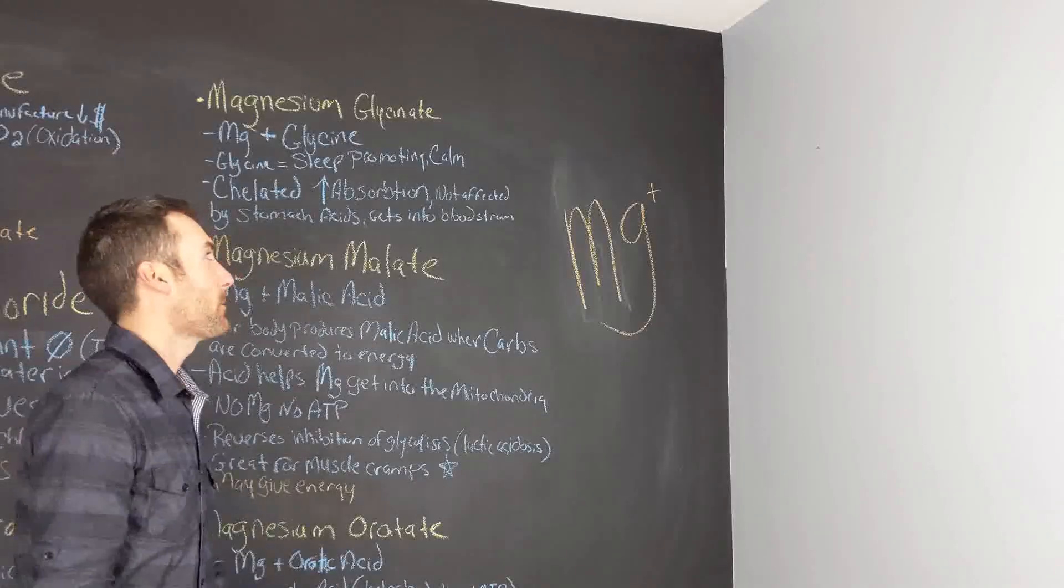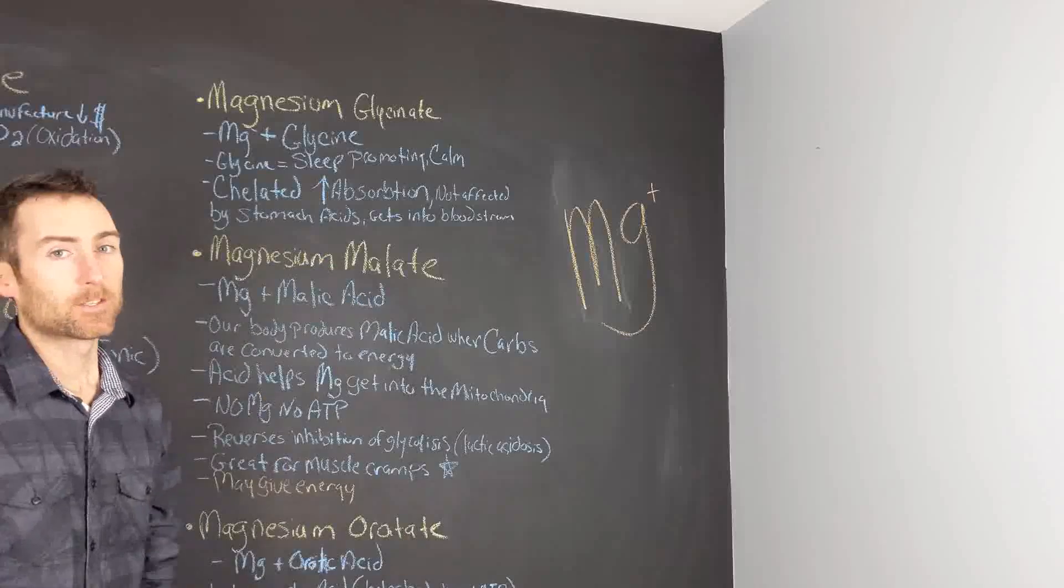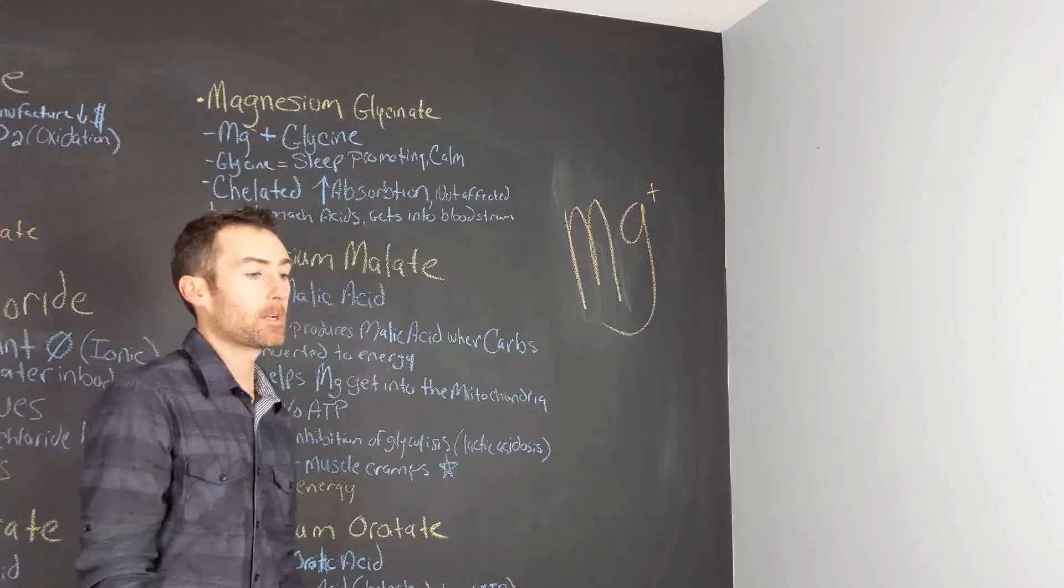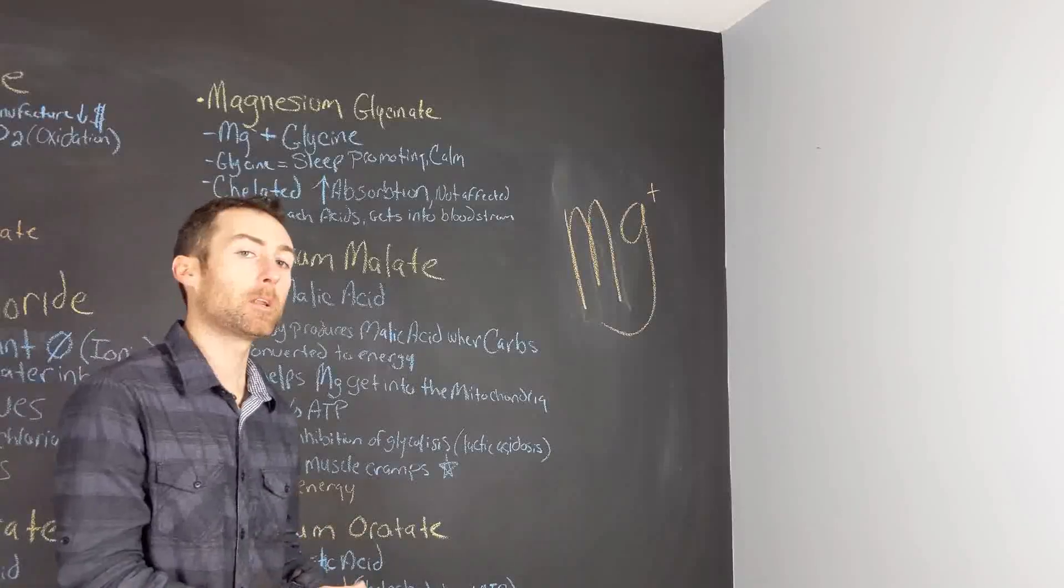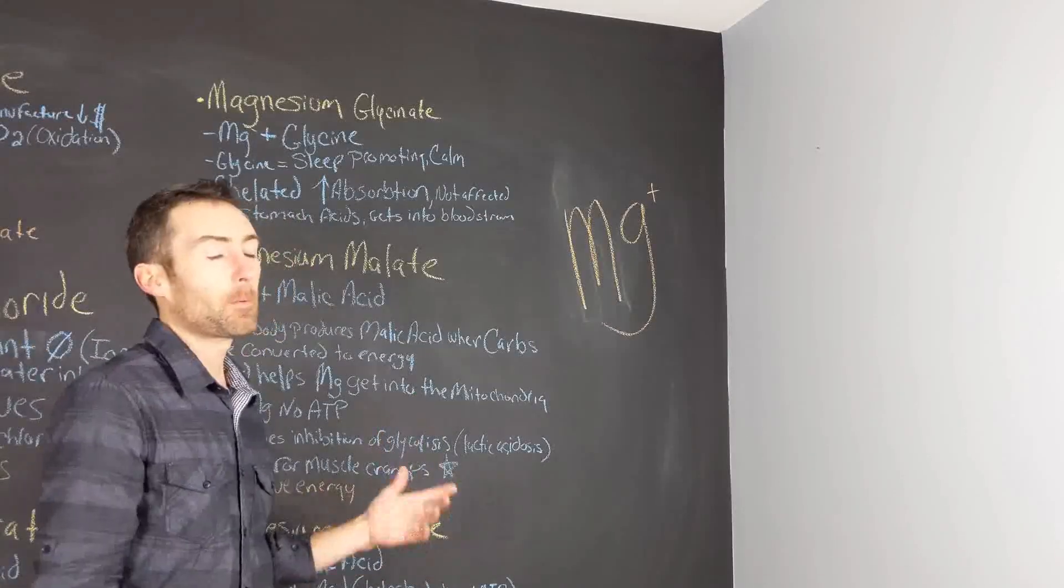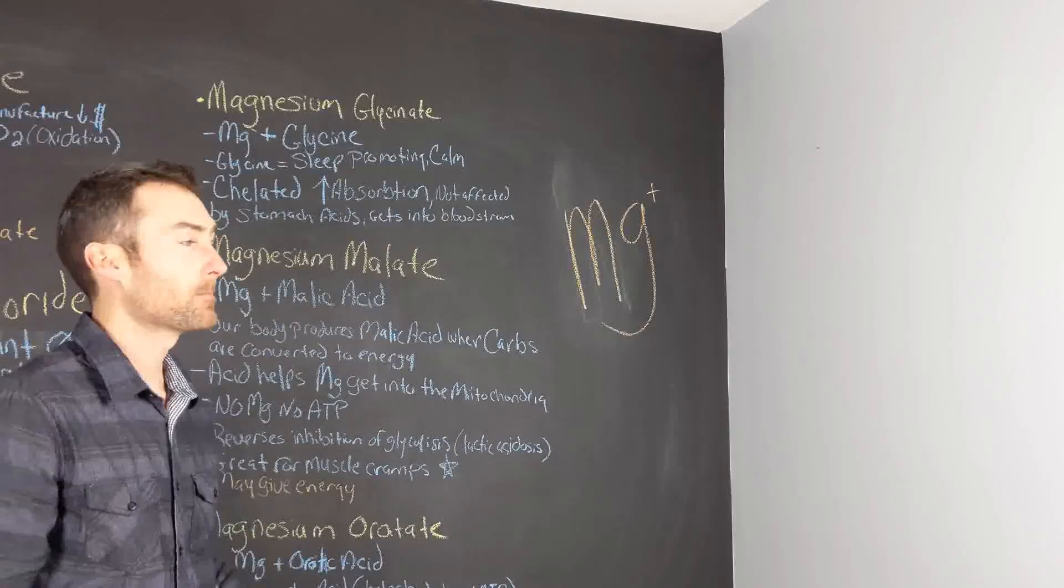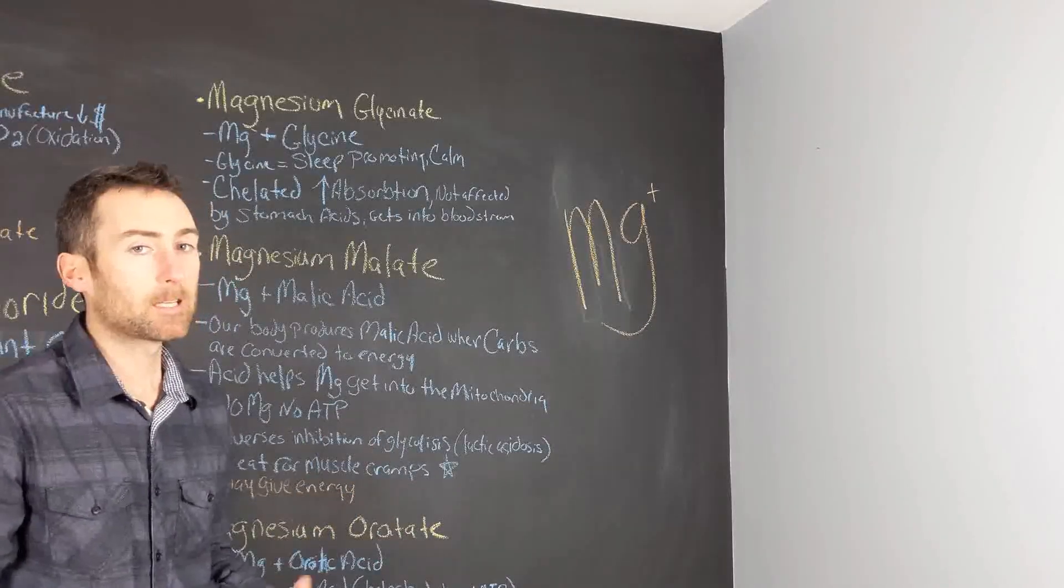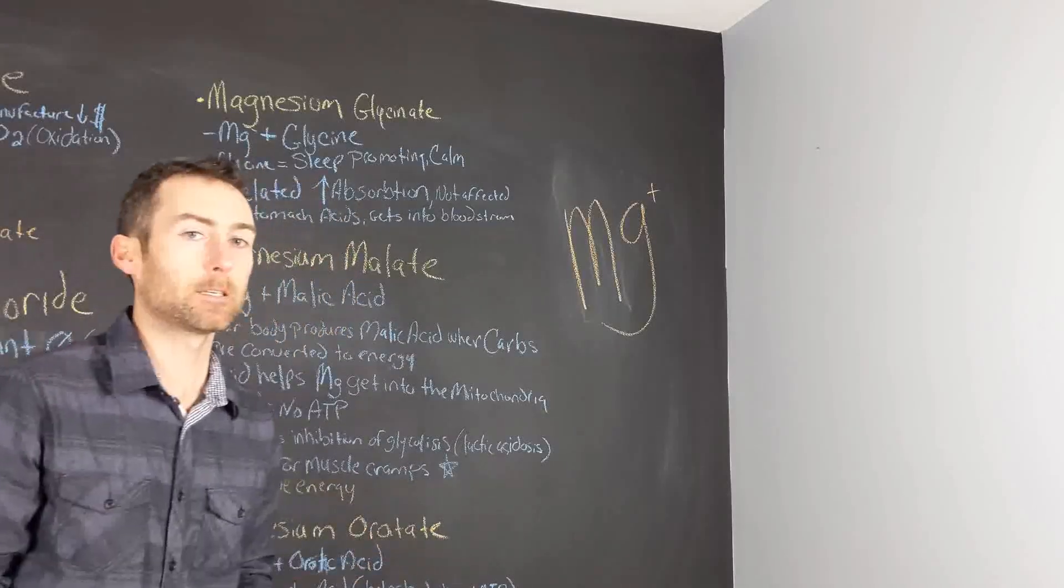I want to talk to you about the next form of magnesium, magnesium glycinate. Magnesium glycinate is pretty much your standard chelated, meaning bound to an amino acid supplement you're going to find in most magnesium chelated supplements. Magnesium glycinate is magnesium bound to the amino acid glycine.